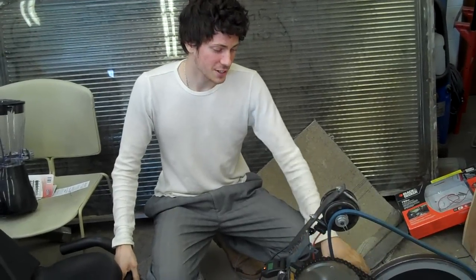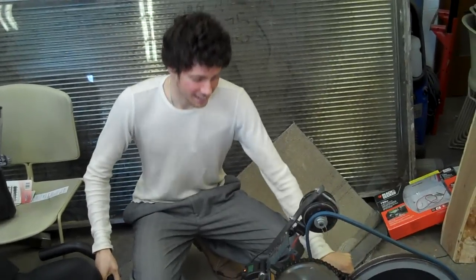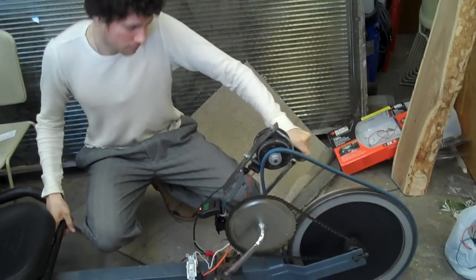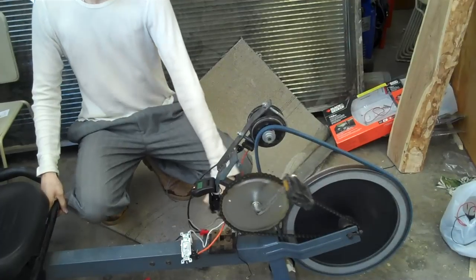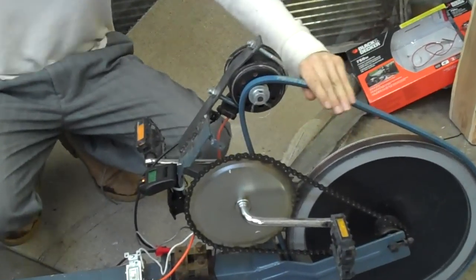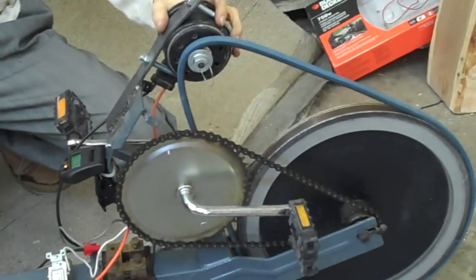This is our exercising bike that generates electricity. What we did is we took a thrown away exercise bike from the side of the street and hooked up a generator to it, which is just a motor. When you spin a motor externally, it creates electricity.